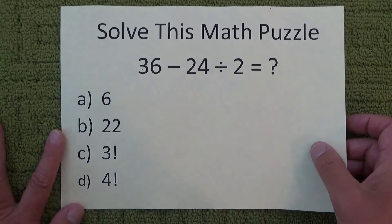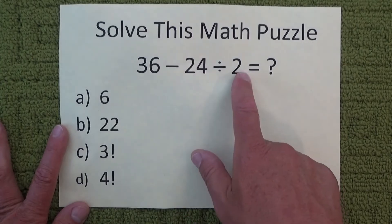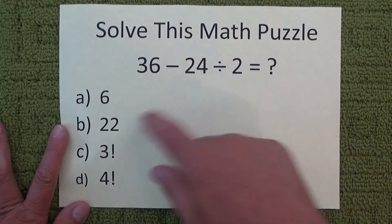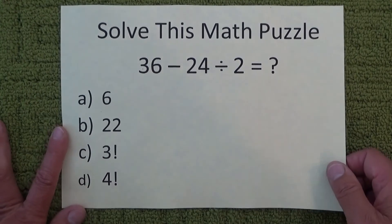Hello, today I'm going to show you this great math puzzle which is 36 minus 24 divided by 2 equals, and you're given four options for what that equation might be equal to.